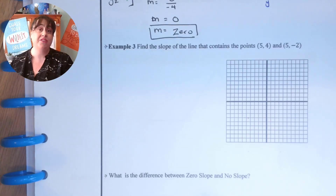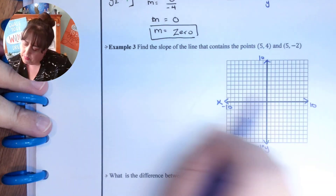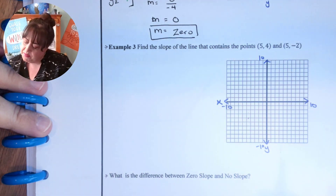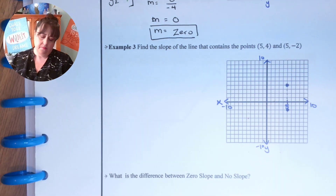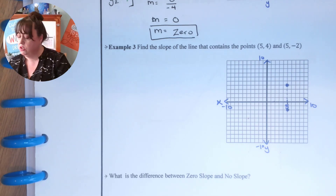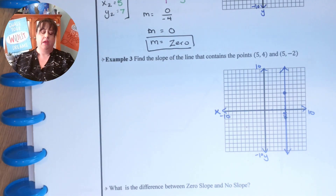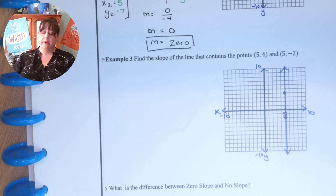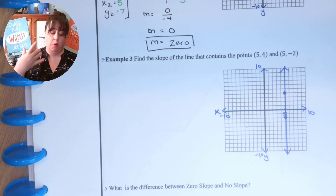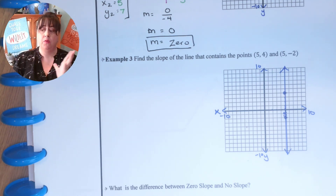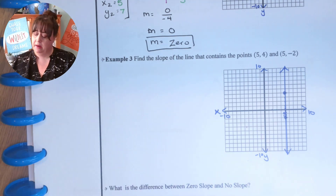Again, do your axes and your scale. Now we're going to points (5,4) and (5,-2). We're using a straight edge to make the line. This is a vertical line, so now we're going to do it both ways — we're going to make the slope triangle and we're going to do it mathematically.